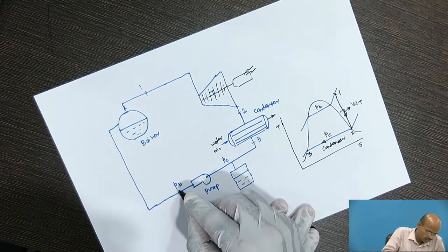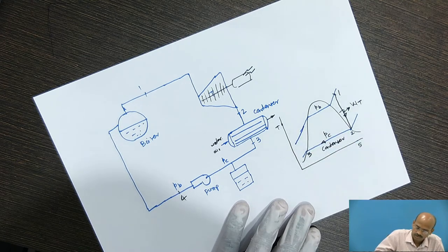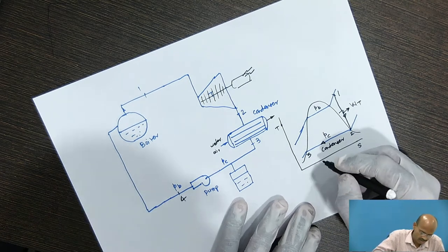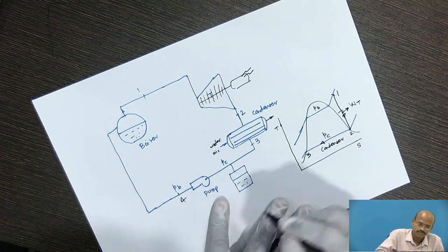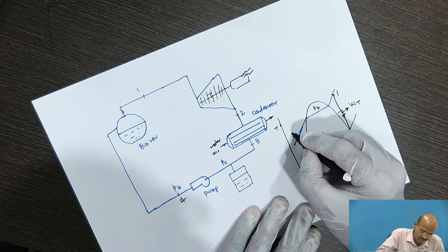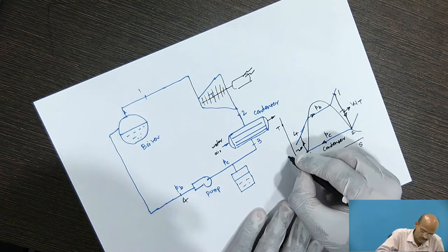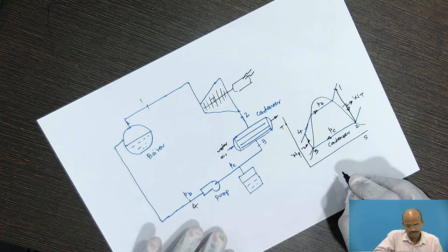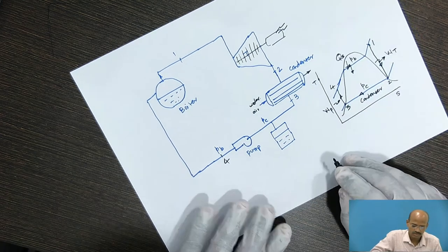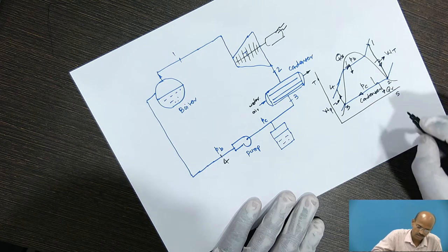3 to 4 is the pressurization process. So, the drawback of two-phase Carnot cycle is overcame in this Rankine cycle. So, what this pump does? This pump will pressurize this water from condenser pressure to boiler pressure. So, this is the work required to drive the pump. This is the heat required to be given to the boiler. This is the heat rejected by the condenser Qr.